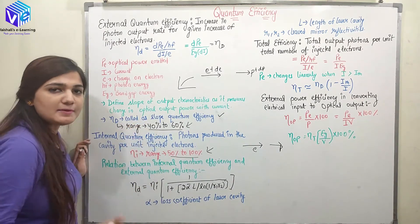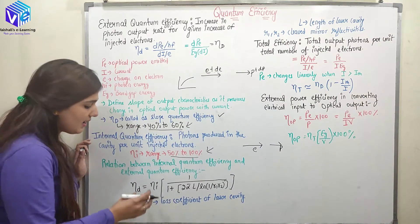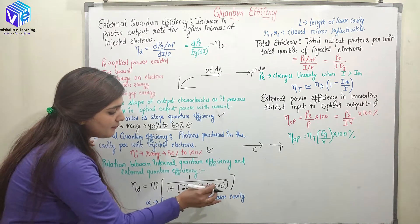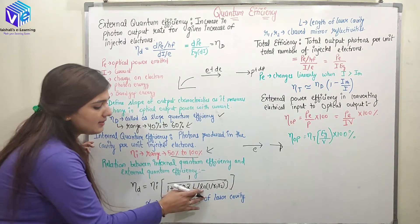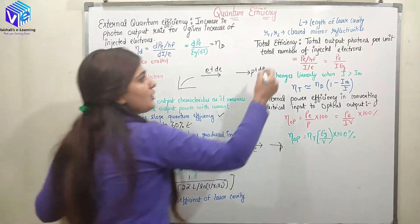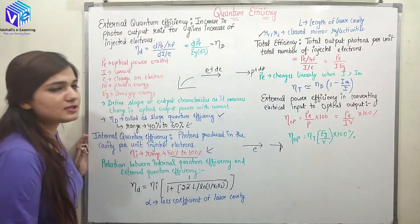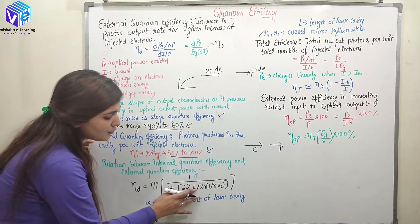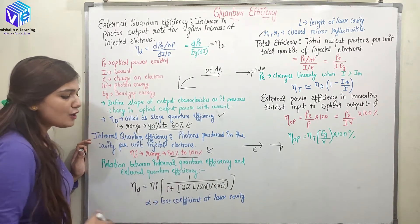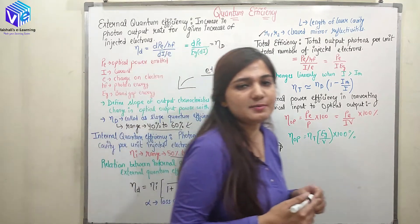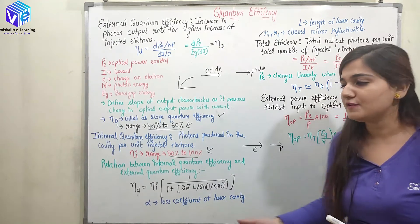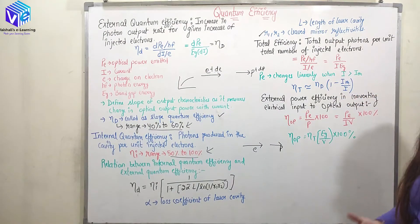Internal quantum efficiency is represented by the symbol eta i. The relation is: eta D equals eta i multiplied by 1 upon (1 plus 2 alpha L divided by ln(1 upon R1 R2)), where ln is the logarithm term. R1 and R2 are the reflectivities of the two cleaved mirrors. L is the length of the cavity. Alpha is the loss coefficient of the laser cavity, measuring the losses of photons inside the cavity.